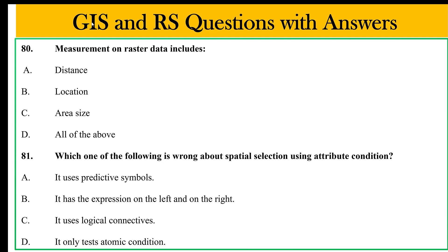Measurement on raster data includes distance, location, area size — all of the distance and location and area size. Which one of the following is wrong about spatial selection using attribute condition? Spatial selection by location.